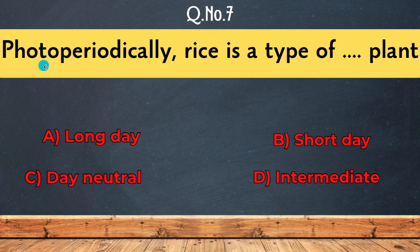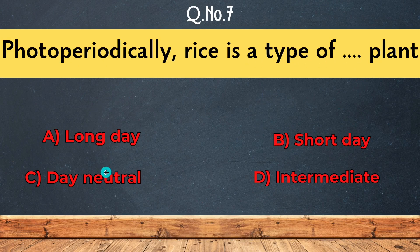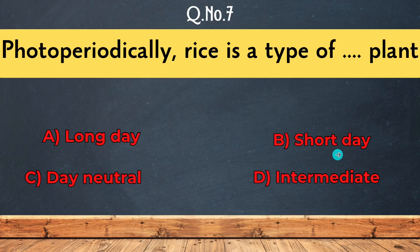Question 7: Photoperiodically, rice is a type of — long day plant, short day plant, day neutral plant, or intermediate plant. The correct answer is short day plant.